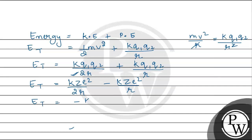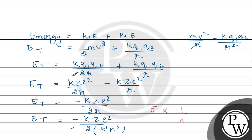So the total energy E = k·Z·e² / (2r) − k·Z·e² / r = −k·Z·e² / (2r). Now substituting the radius formula r ∝ n²/Z (treating k·Z as a constant), the energy becomes inversely proportional to n square. So E is inversely proportional to n square. Hope you understood it well — best of luck!